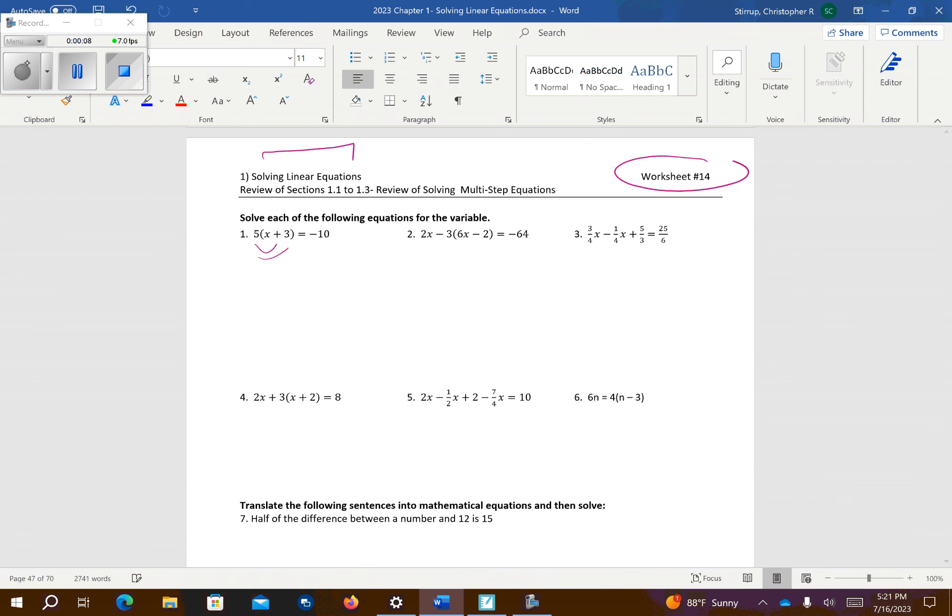I'm going to go ahead and solve. Distribute over, so I get 5x plus 15 is equal to negative 10. Go ahead and subtract 15 from both sides. So I get 5x equals negative 25, divide your side by 5. And it looks like we're going to get negative 5 for an answer.